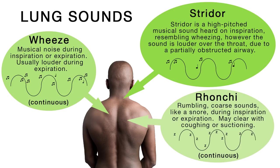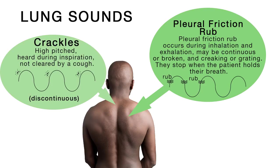Stridor is a high-pitched, musical sound heard on inspiration, resembling wheezing. However, the sound is louder over the throat, due to a partially obstructed airway. Crackles are high-pitched, discontinuous sounds during inspiration, not cleared by a cough, and further defined as fine and coarse. Pleural friction rub occurs during inhalation and exhalation, may be continuous or broken, and creaking or grating. They stop when the patient holds their breath.